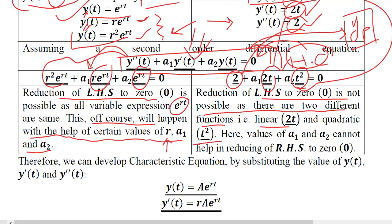Here values of A1 and A2 cannot help in reducing the right hand side to zero because if we take T common then it will be 2 plus A1, 2 plus A2, T. So T will be left here on the left hand side even if we shift this to the right hand side and it reduces to zero.